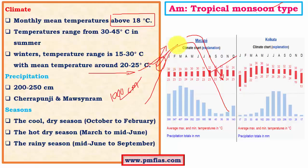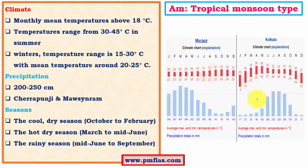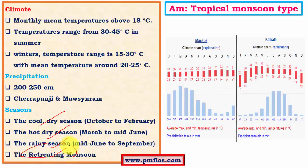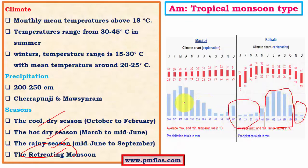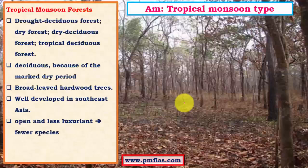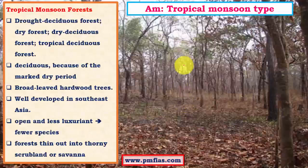Looking at climatic graphs, we have distinct wet and dry seasons. There are different seasons: the cool dry season, the hot dry season (summer and winter), the rainy season, and the retreating monsoon season. The rainy season and retreating monsoon are associated with rains in this region. The rainy season shows good rainfall while other seasons are totally or partially dry.